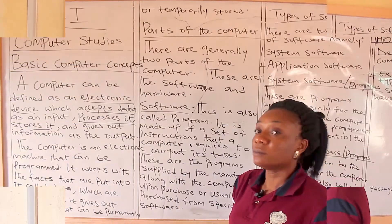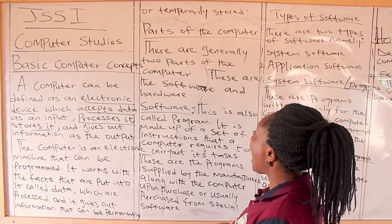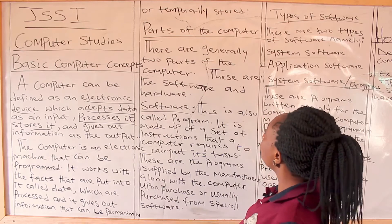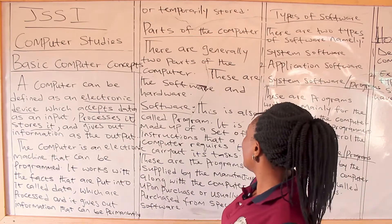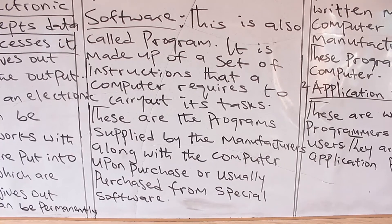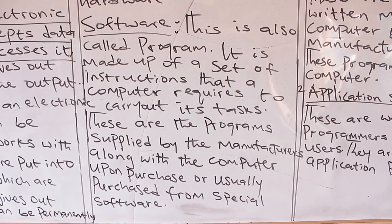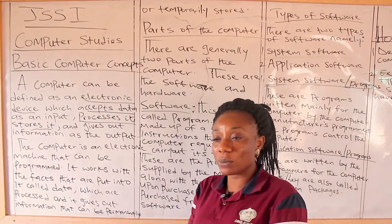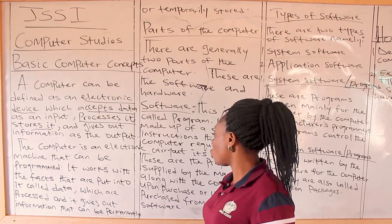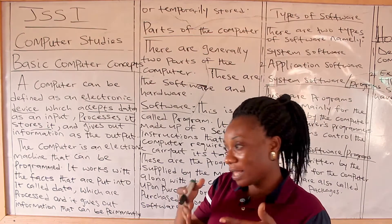Now let's come to the parts of the computer. Majorly, the computer has two parts: the software and the hardware. Let's talk about the software. The software is also called a program. It is made up of a set of instructions — the instructions you give to the computer, the things you ask the computer to carry out and the tasks you give to the computer. The computer then carries out those instructions.